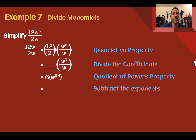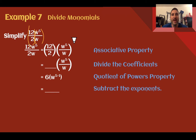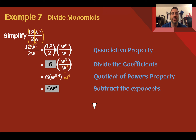Example 7: Divide monomials. Simplify 12w to the 5th divided by 2w. Just as we separated bases before, here we separate our coefficients and our variables. So 12 divided by 2 is 6. Now use the quotient of powers to divide the same base: w to the 5th divided by w, which has a hidden exponent of 1. Subtract the exponents: 5 minus 1 gives w to the 4th. Put it back together: 6w to the 4th. So 12w to the 5th divided by 2w is 6w to the 4th.